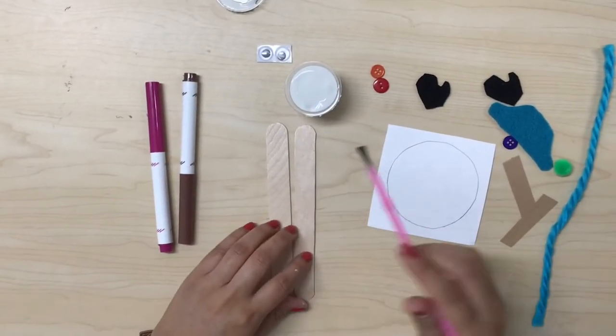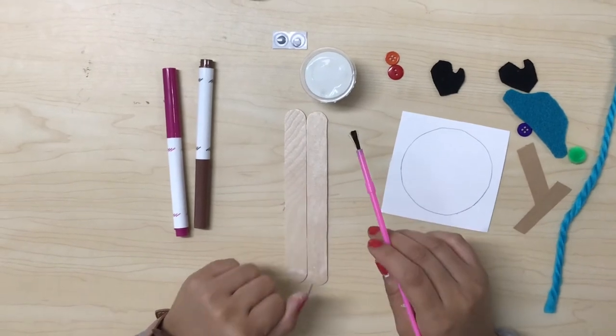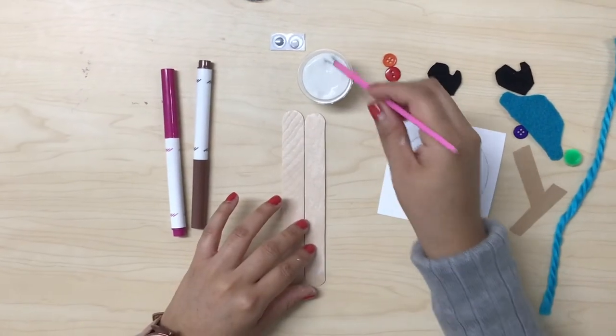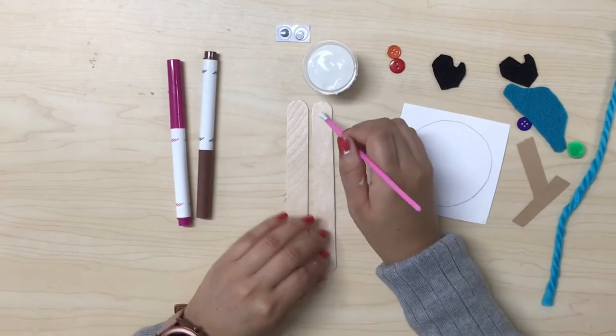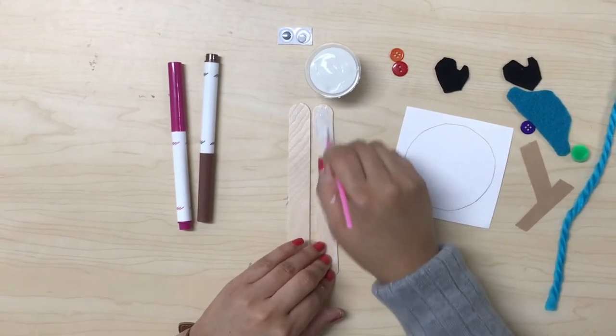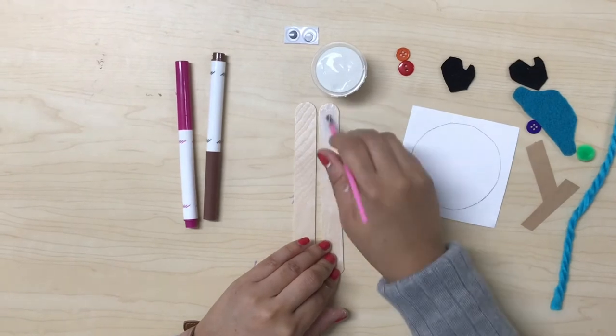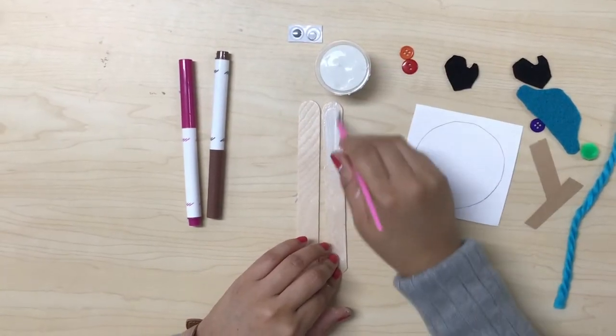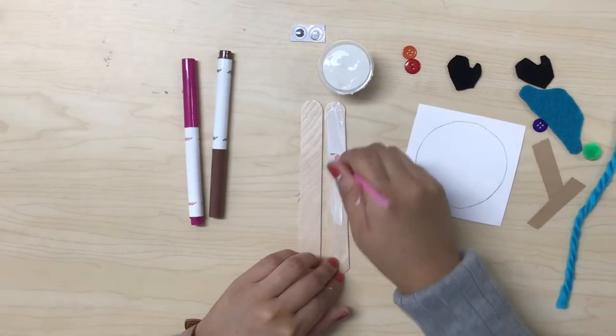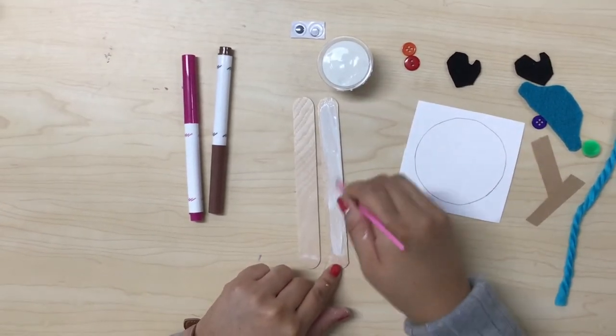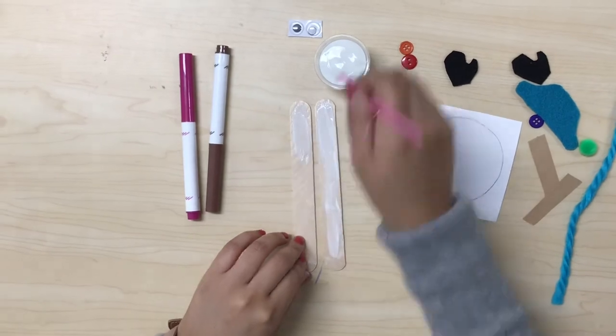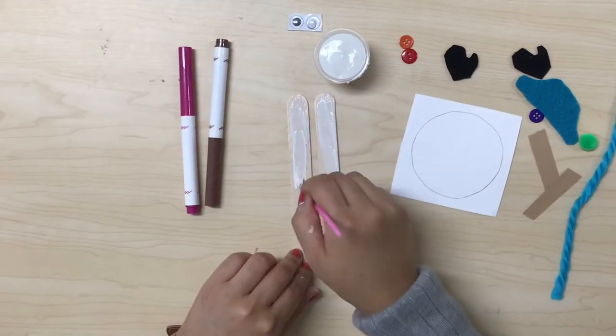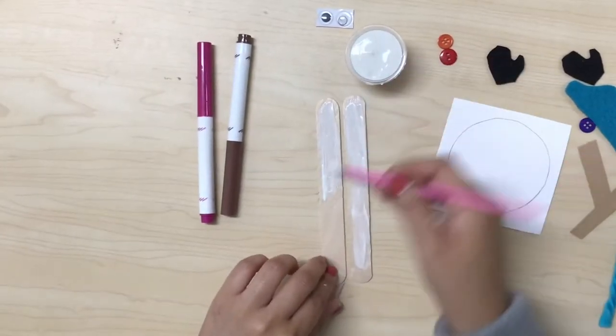we are going to paint our popsicle sticks. It will be the snowman body. Take your brush and dip it in your white paint and start brushing, start painting your popsicle stick white like a snowman.